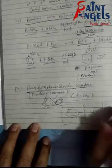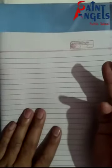Hinsberg reagent reacts with primary amines and also with secondary amines. However, it does not react with tertiary amines. Therefore, this reagent is used to distinguish primary, secondary, and tertiary amines — similar to how the carbylamine reaction is used for distinguishing amines.